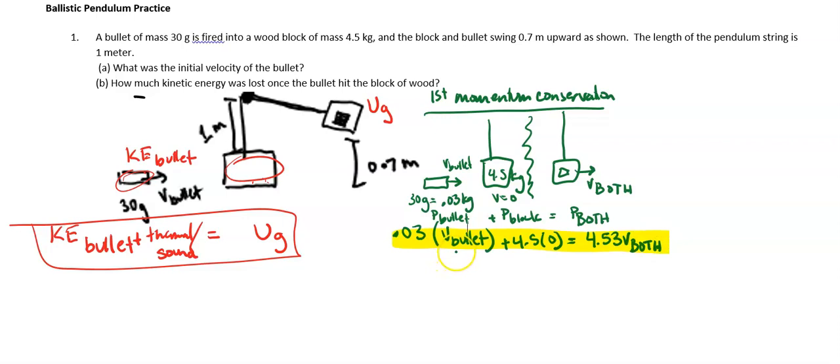So eventually, we want to find the velocity of the bullet. So in order to do that, we're going to have to find the velocity of both of them right afterwards. So let's go ahead and see what we can do.